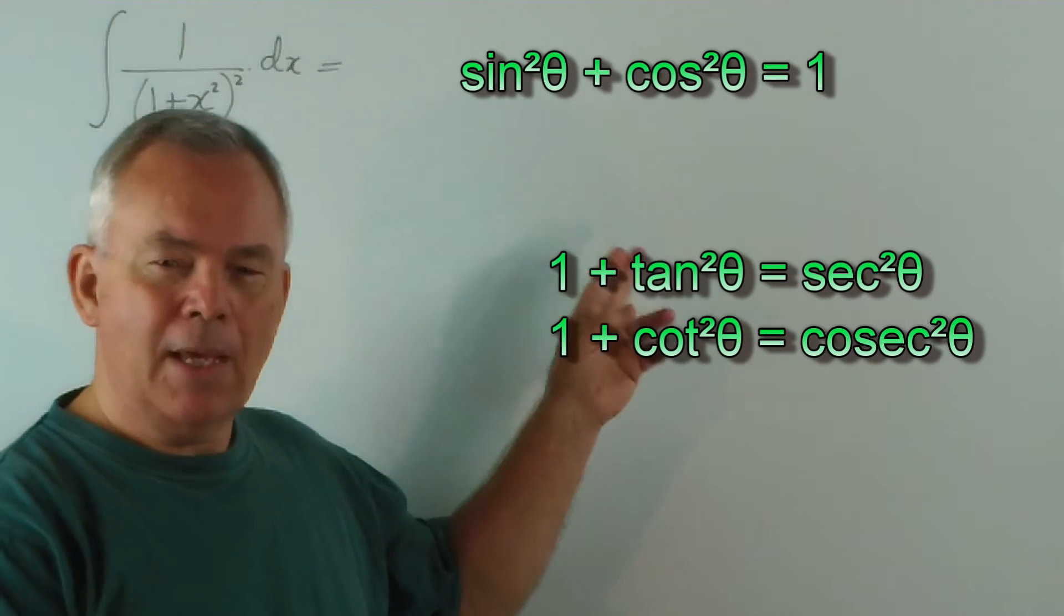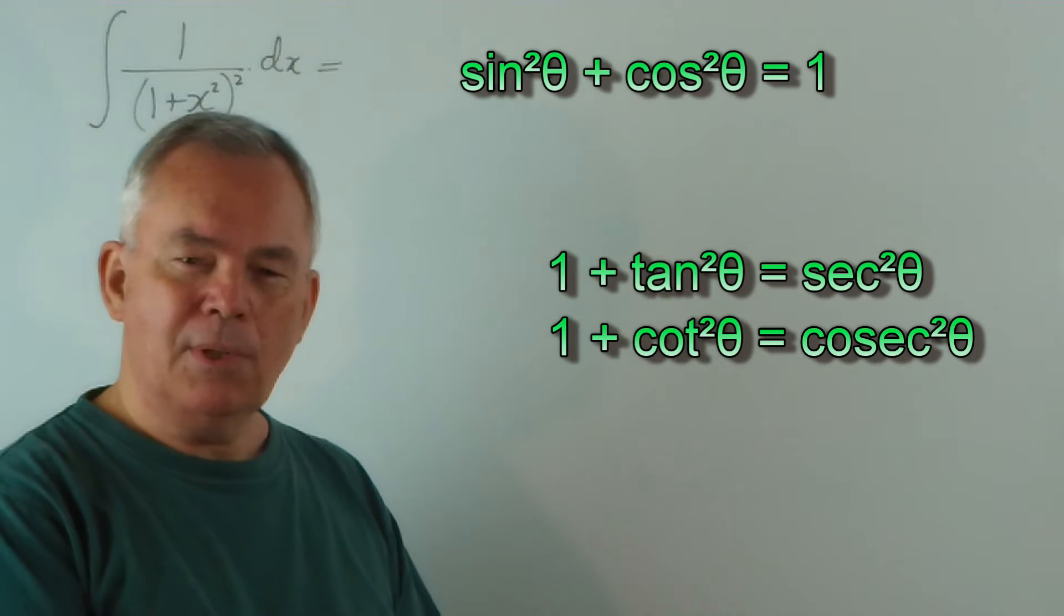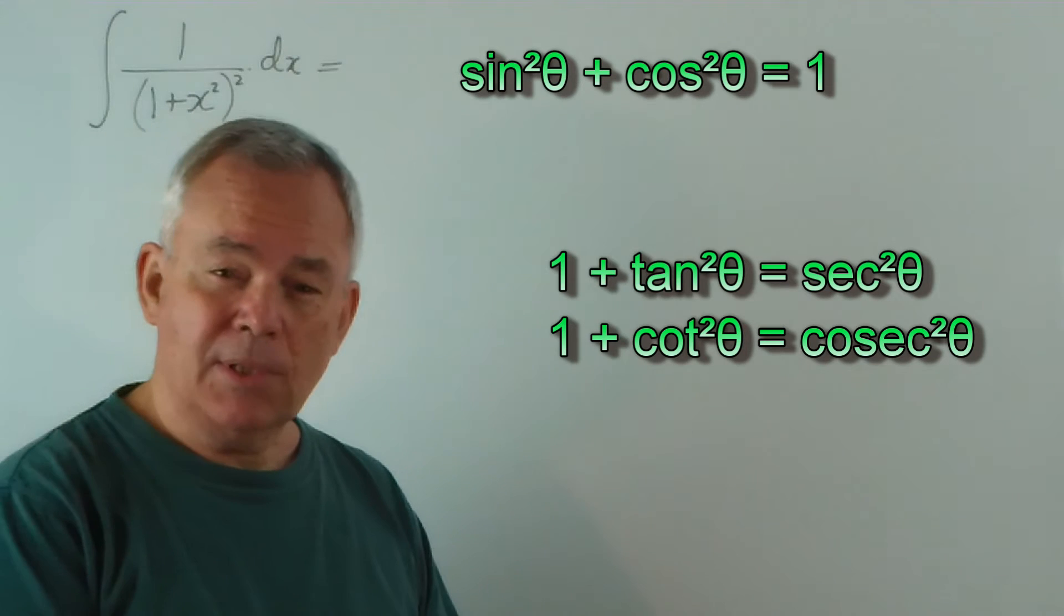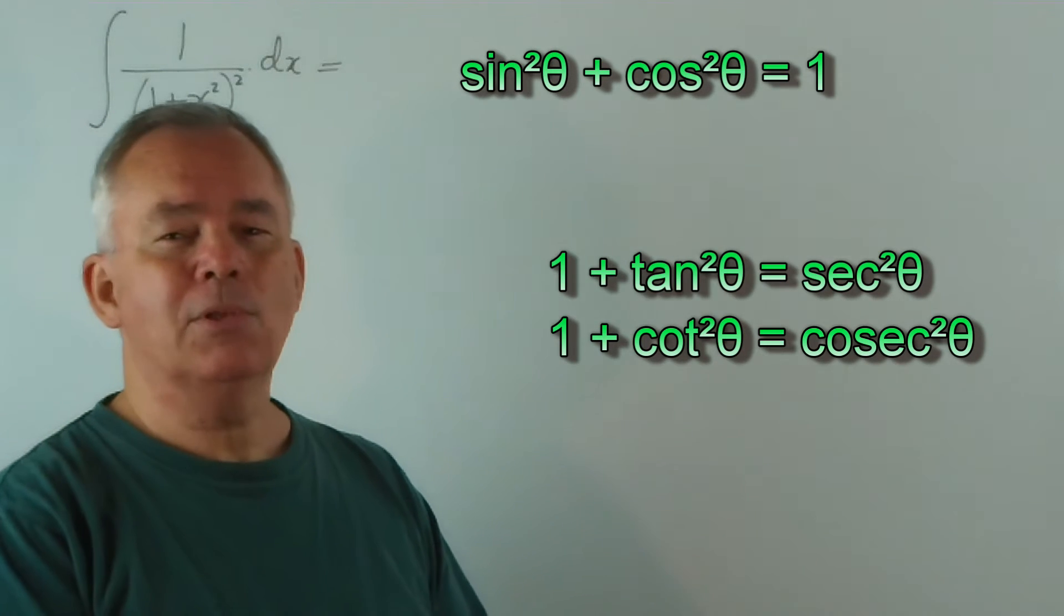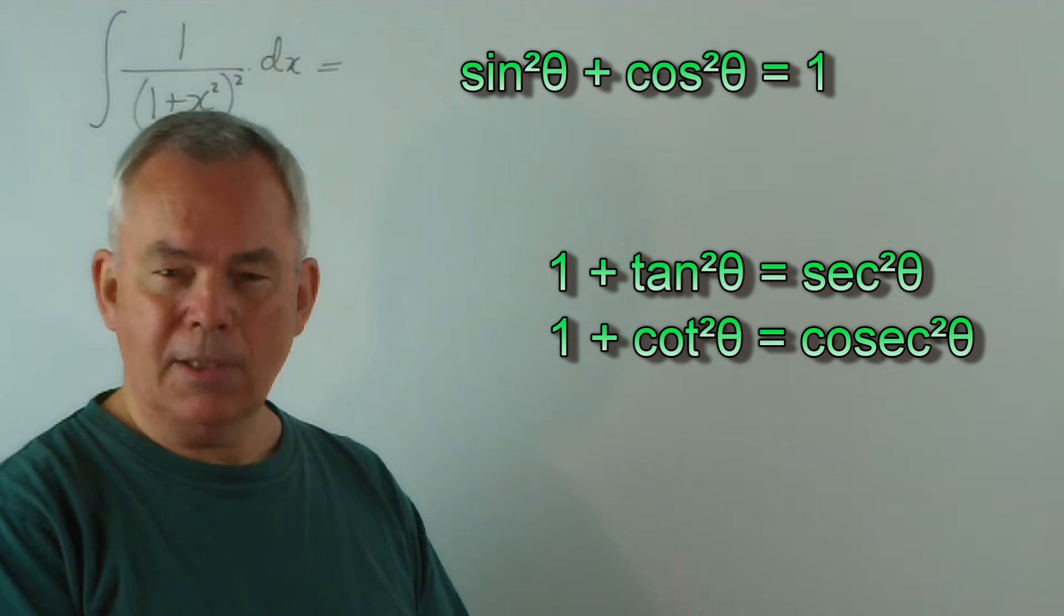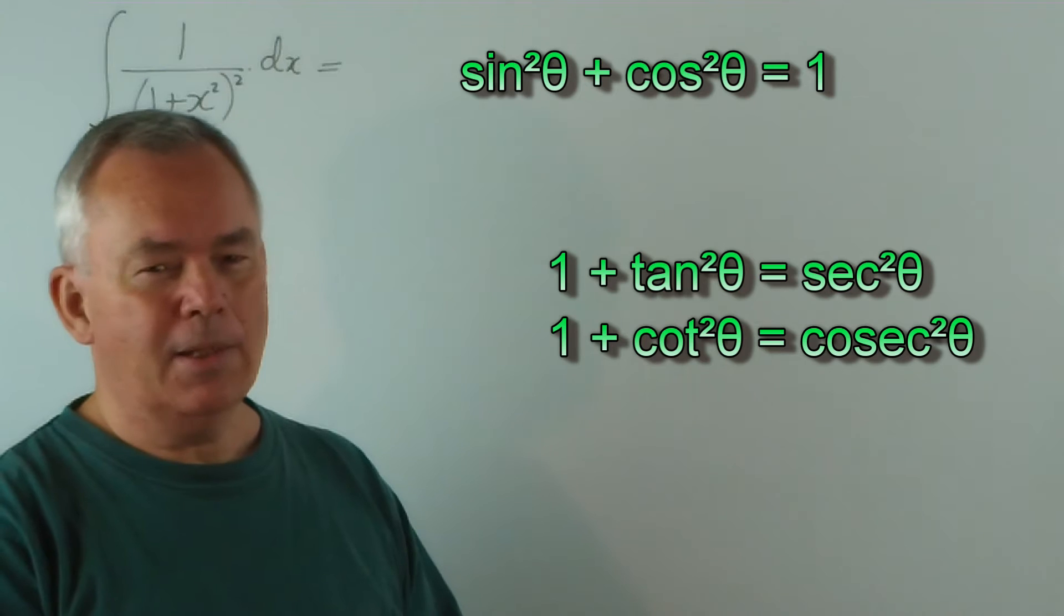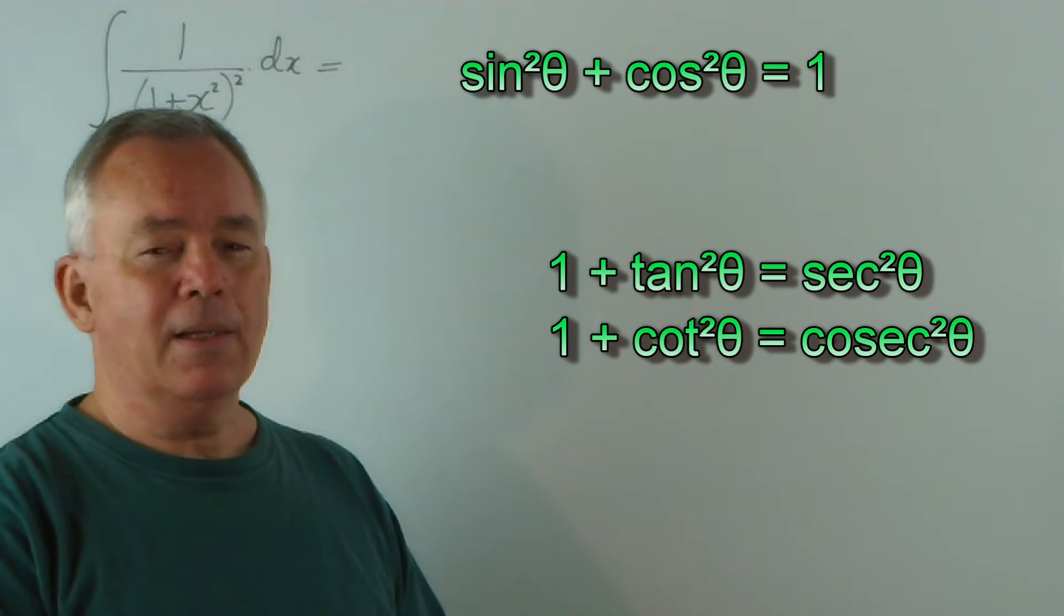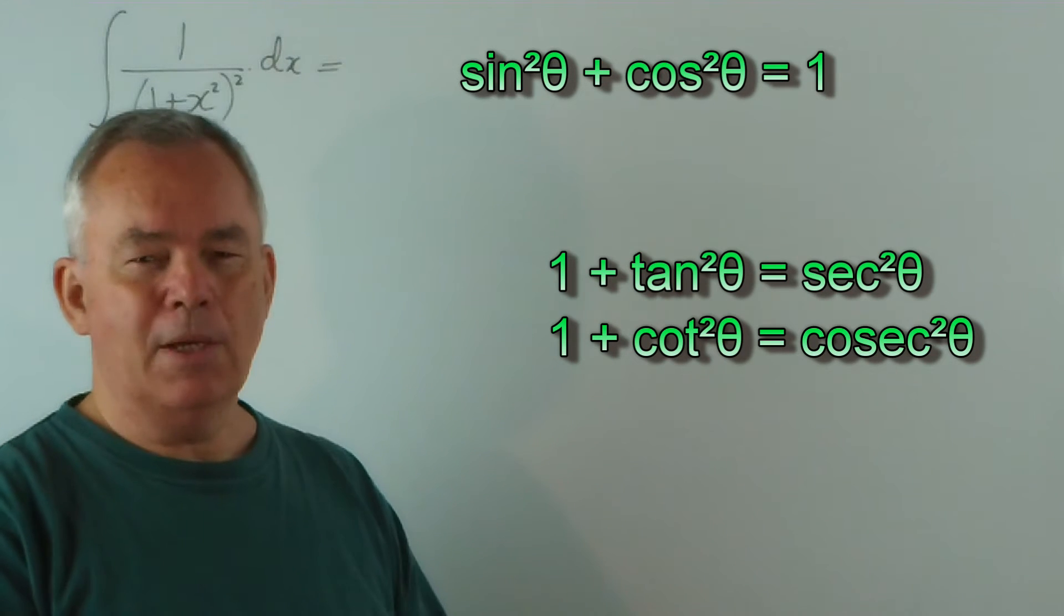We have three Pythagorean identities. sin²θ + cos²θ = 1. 1 + tan²θ = sec²θ. And 1 + cot²θ = cosec²θ. Now, first of all, I should indicate that here in Australia we write cosec as c-o-s-e-c. In the United States you would simply write c-s-c. I hope you'll bear with me in that.